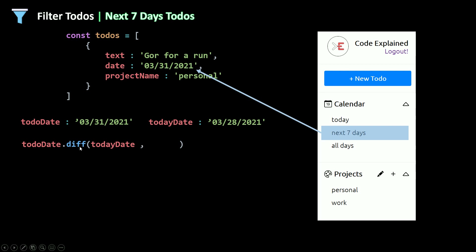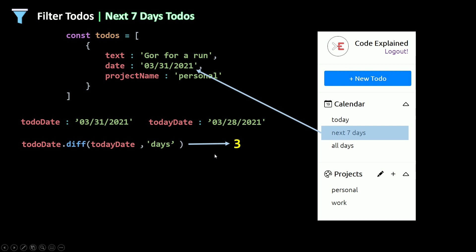The second argument for the diff method is 'days' — it could be minutes, seconds, years, months, whatever you want, but here we need the difference in days. This returns 3 in our example. Now if we check: 3 is less than 7 and greater than or equal to 0, because we don't want dates in the past. A past date would return a negative number, so we need all numbers greater than or equal to 0 to confirm it's not in the past.